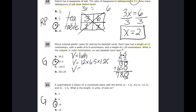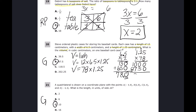Multiplying 78 times 125: 8 times 5 is 40, 2 times 8 is 16 plus 4 is 20, 8 plus 2 is 10. With a placeholder, 7 times 5 is 35, 7 times 2 is 14 plus 3 is 17, 7 plus 1 is 8. Result is 9750, and with two decimal digits that's 97.50. The answer is B.